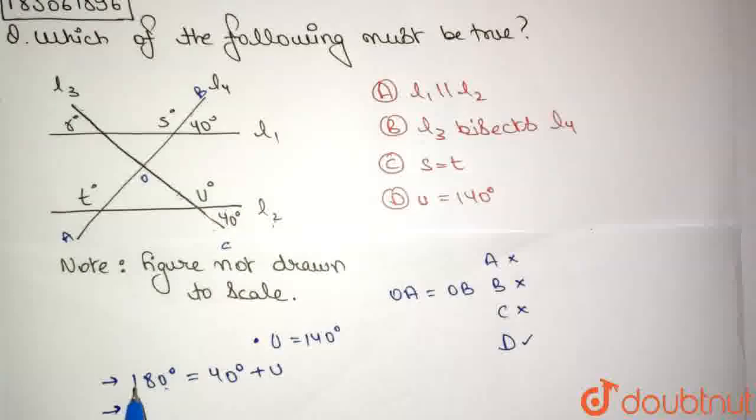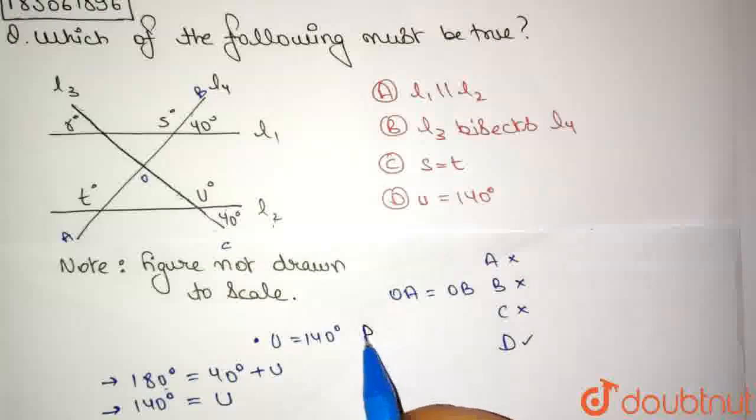So we have 180 degrees minus 40 degrees equals 140 degrees. And if we subtract 40 degrees from this side, this 40 degrees is going to cancel out and what remains is simply U. So we are obtaining the value of U as 140 degrees, and this is what has been given to us in option D.